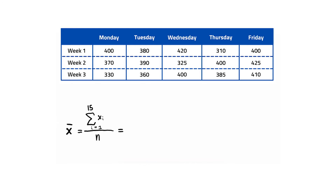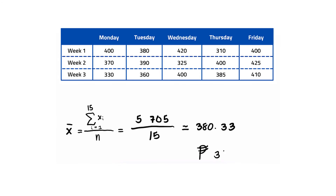Now let's go back to Romi's table and find the mean, median, and mode. What is the average earning of Romi per day? The sum of Romi's earnings for 15 days is 5,705 pesos. Dividing: 5,705 ÷ 15 = 380.33. Therefore, his average earning per day is 380 pesos and 33 centavos.